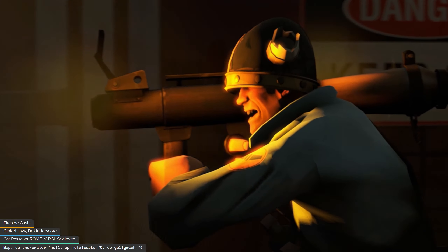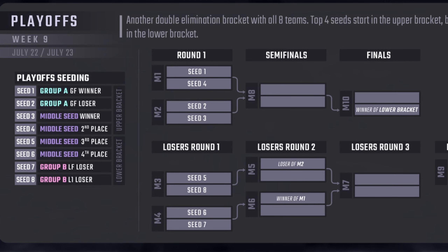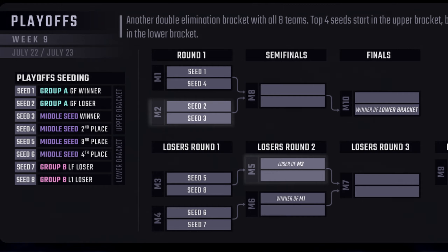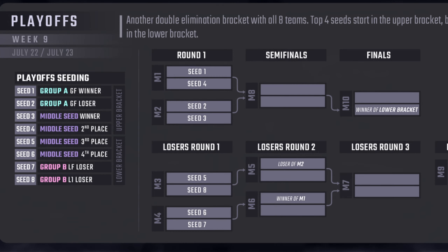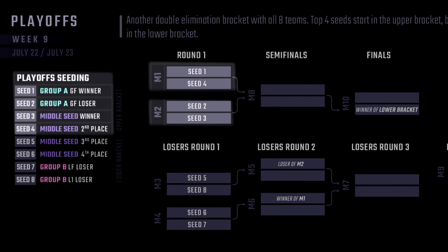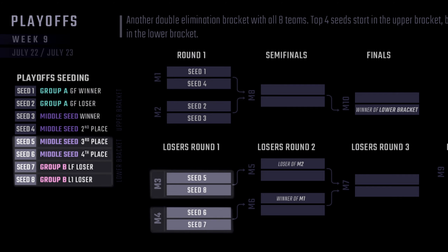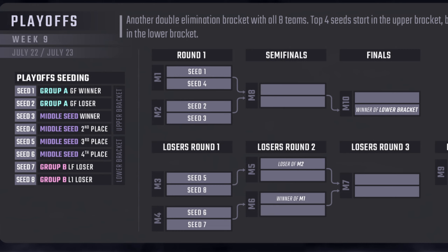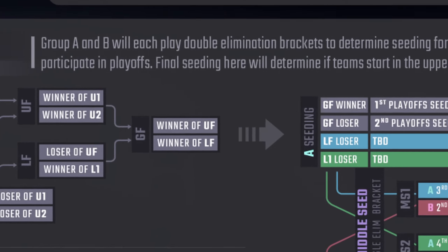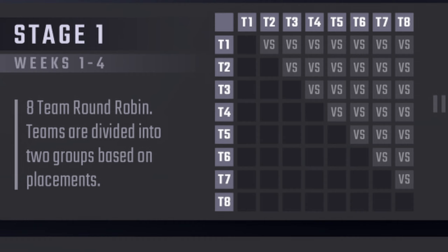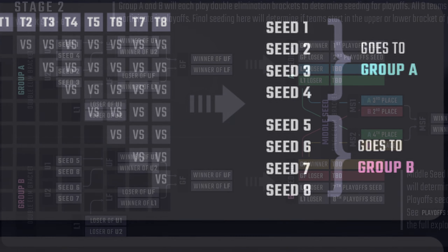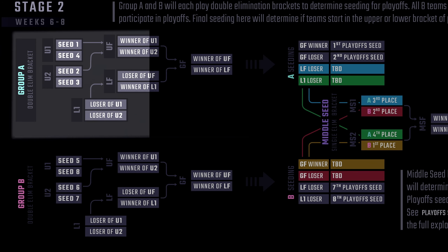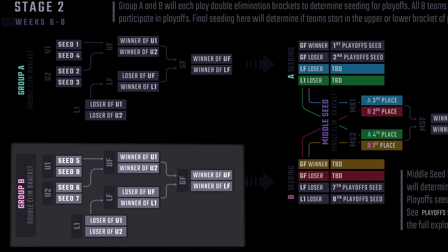Season 12 of Invite is seeing a large format change. This season has eight teams and playoffs will be open to all eight teams. However, seeding matters greatly as the bracket is sorted into an upper bracket and lower bracket. Losing in the upper bracket sends a team to the lower bracket, while losing in the lower bracket results in elimination. The top four seeds enter playoffs in the upper bracket, the bottom four in the lower bracket. The regular season will be a competition for the best possible seeding. Stage one is a single round robin where every team plays each other once, and the final results determine sorting into stage two, which consists of two groups: Group A and Group B.